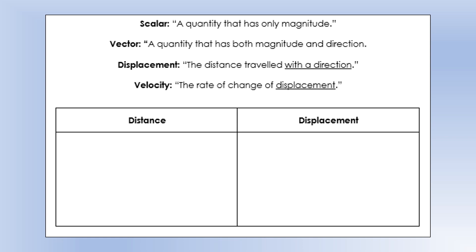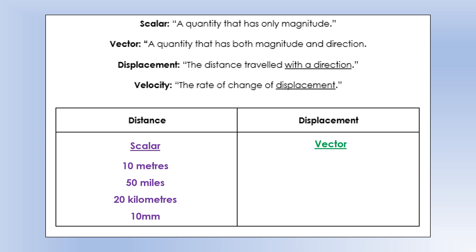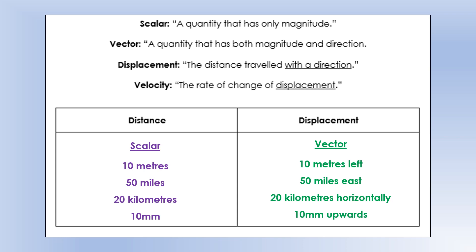Most properties of motion you've come across have vector equivalents. For distance, the vector equivalent is displacement — the distance traveled with a direction. Velocity is the vector equivalent of speed. Distance is a scalar, so its units are just numbers with units and no direction. Displacement is a vector quantity, so it has both a magnitude and a direction — left, east, horizontally upwards, or sometimes expressed as an angle.